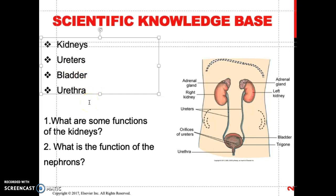The urethra in females is shorter — about three to four centimeters. The male urethra, on the other hand, is about seven to eight inches. This is one of the main reasons why when inserting a Foley catheter for a male you insert it seven to eight inches, and for a female you insert it three to four centimeters, because the female urethra is shorter.